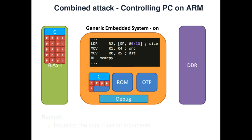To conduct this attack, we have the same setup as before — our code and pointers in flash. Instead of targeting the parameter setup, we glitch somewhere else and try to introduce a fault into the memcopy itself. When the device boots, we wait until it has copied in our code, and as it's copying our pointers we introduce a fault, hopefully causing one of these pointers to directly end up in the program counter, thus executing our code.